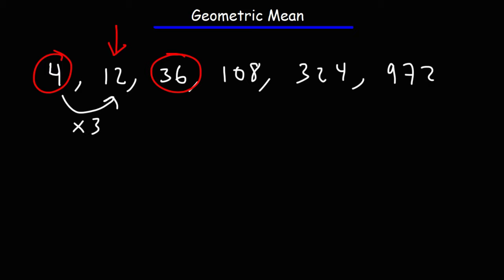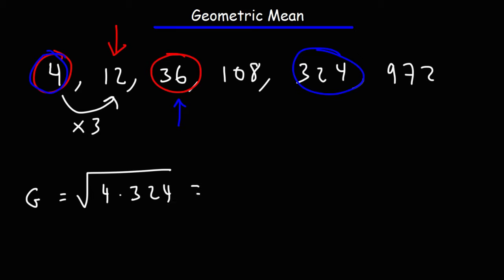Let's try another example. Let's say we want to find the geometric mean between 4 and 324 — that's going to be 36, the number in the middle. If we take the square root of 4 times 324, using a calculator: 4 times 324 is 1296, and the square root of 1296 is 36. So you can see it works.